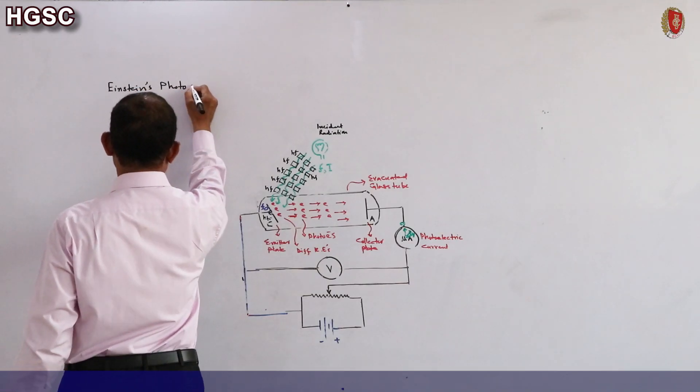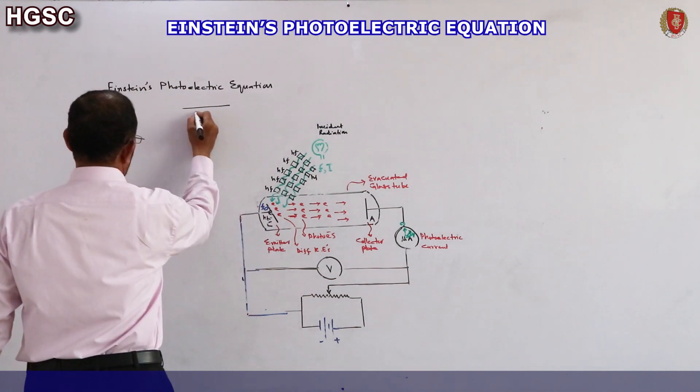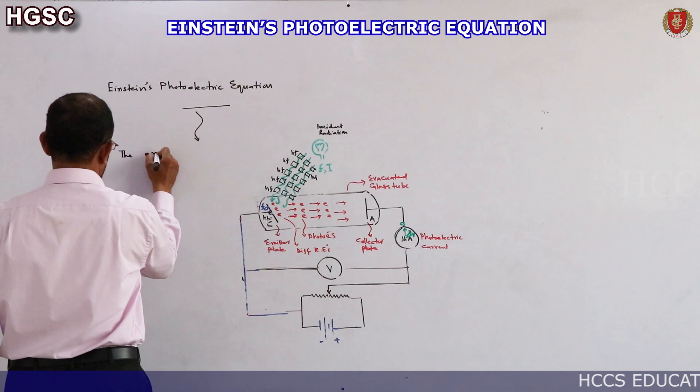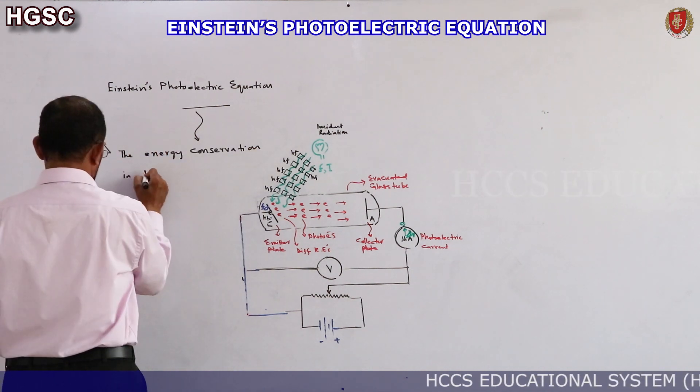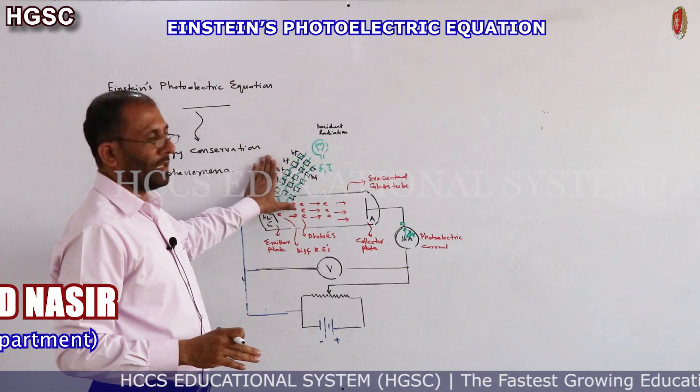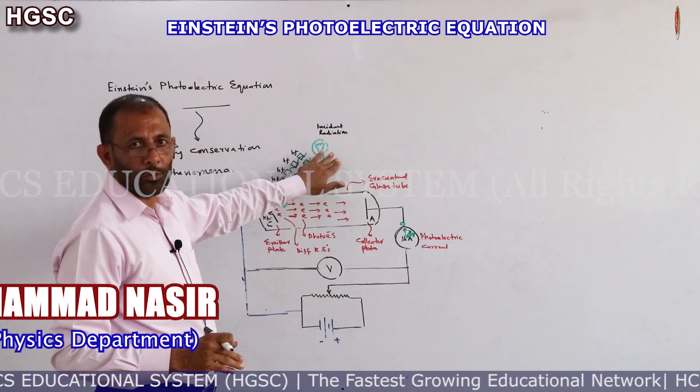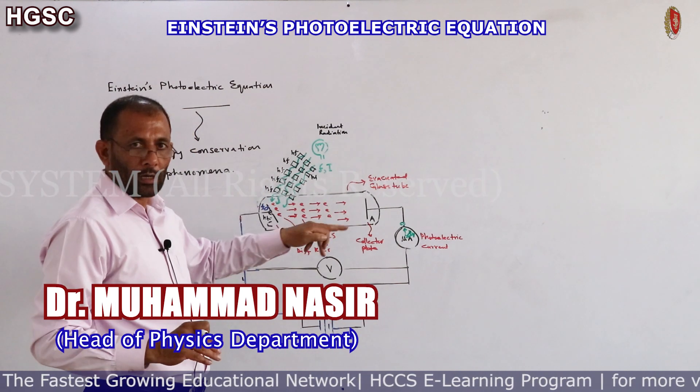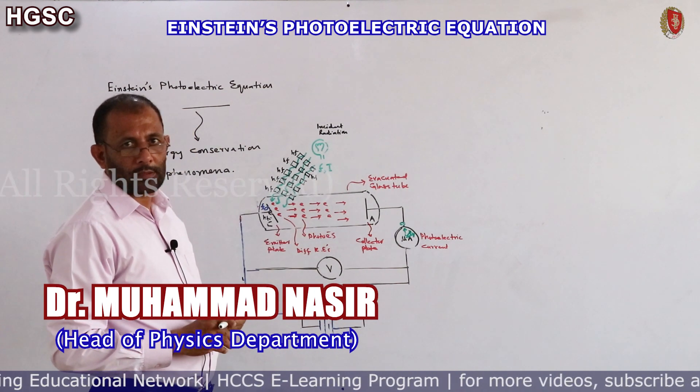Einstein's photoelectric equation is actually the energy conservation in this phenomenon. When light of suitable frequency is allowed to fall on metal surface, electrons are ejected out from the metal surface.